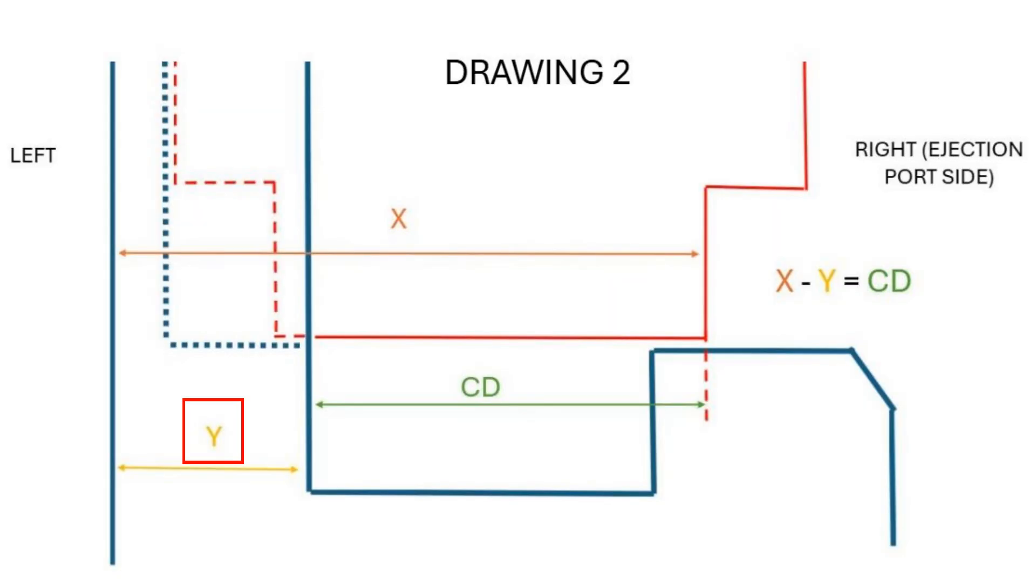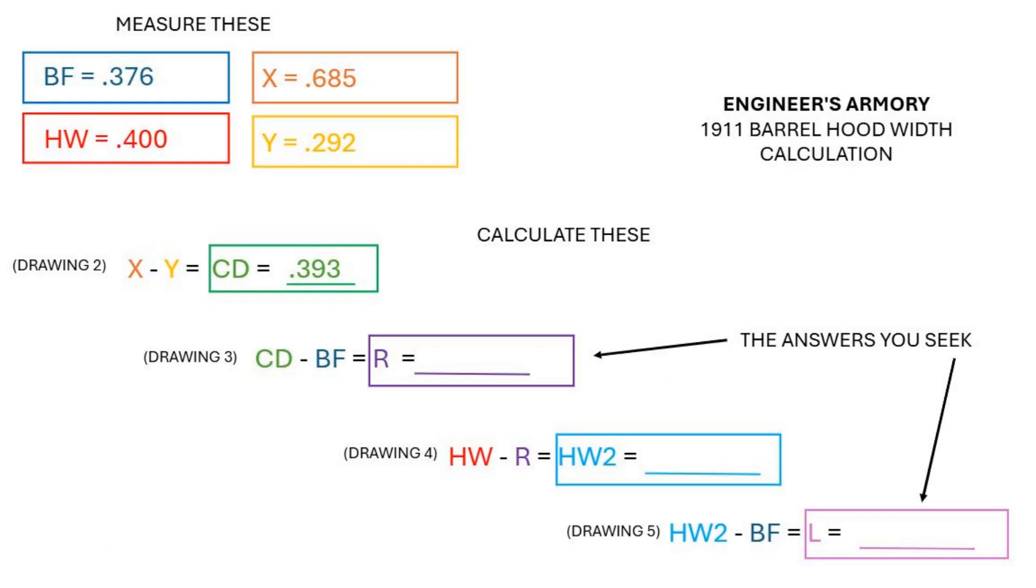I'm going to call this dimension Y and for Y I'm getting 292 thousandths. X minus Y is our control dimension CD. CD in this case is 0.393. If you were using a depth dial on a granite slab you could measure CD directly and you wouldn't need to use this equation with X and Y.